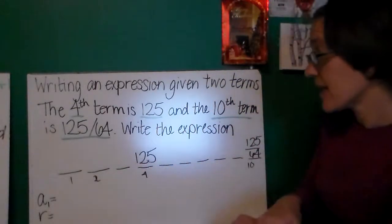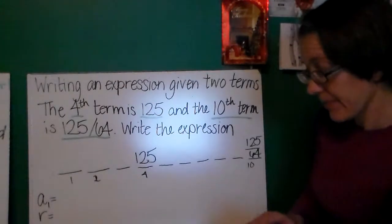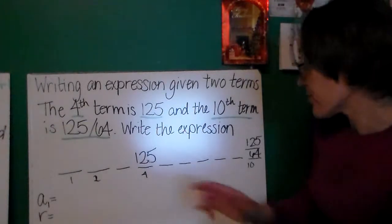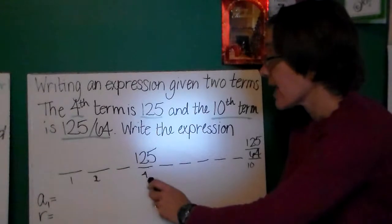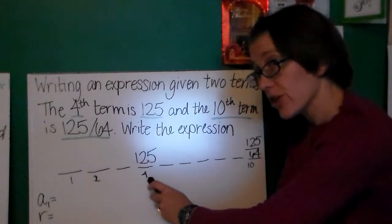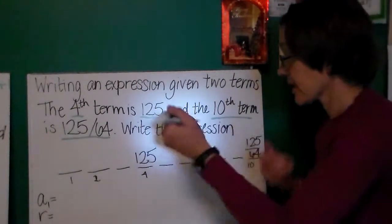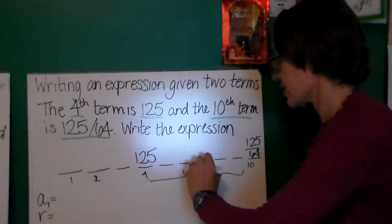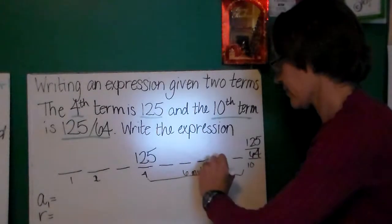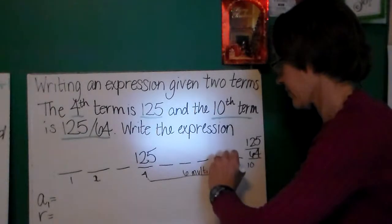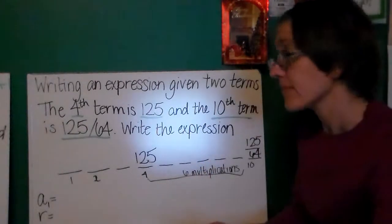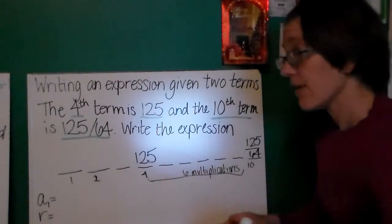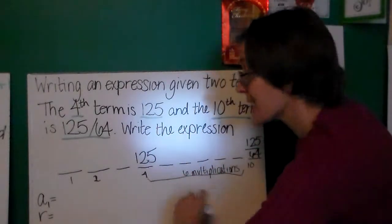So, how am I going to figure that out? Well, I set up the same little list that I set up here on my arithmetic sequences. And I'm hoping that that will be useful again. I noticed that to get from the fourth term to the tenth term, this is six multiplications.